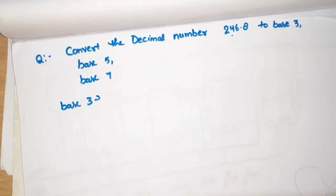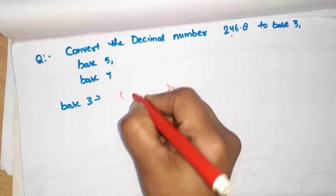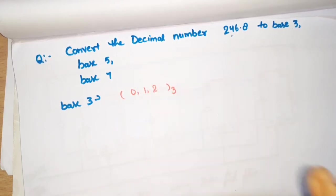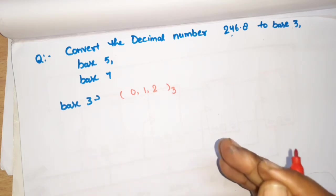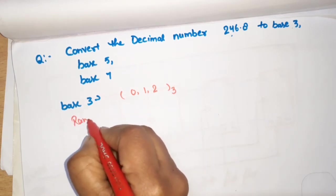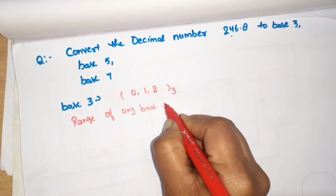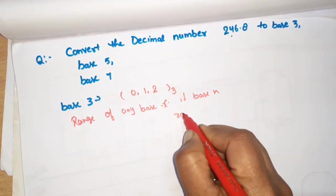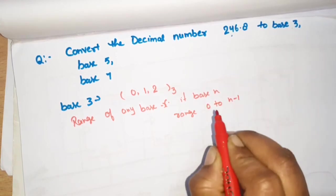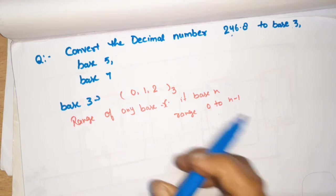When base 3 is given, first of all we know that what numbers are in base 3? If base is 3, then how many numbers will be? Three numbers: 0, 1, 2. What is the range of any base or radix? If base given is n, then the range will be 0 to n-1. In this case, our base was 3, so what is the range? 0 to 2. So these are our numbers.